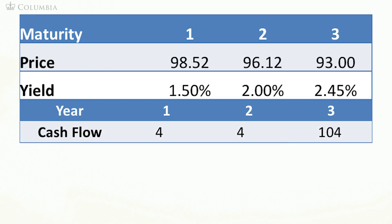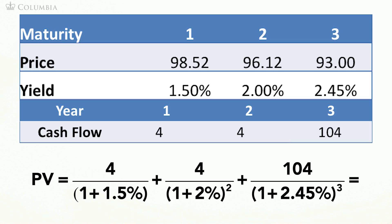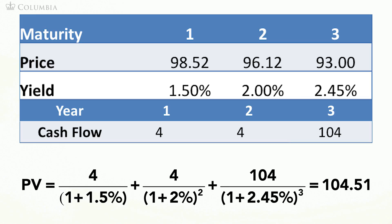Suppose that you want to value a project that pays $4 in year 1, $4 in year 2, and $104 in year 3. The way to do this is to discount each cash flow by the yield from the corresponding maturity. So for example, we discount the year 1 cash flow using the yield computed from a strip that matures in year 1, and so on. Doing this calculation leads to a present value of $104.51.